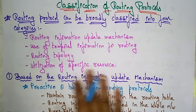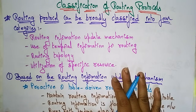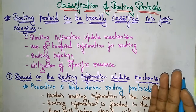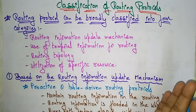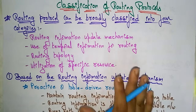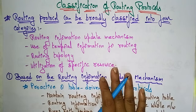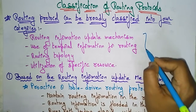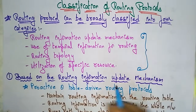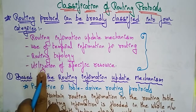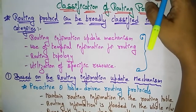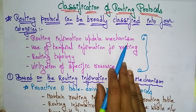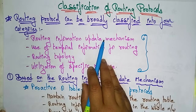In this video I want to just give the introduction part of the classification of routing protocols. Just like the MAC classifications you have learned, in the same way for routing protocols there are different classifications. The routing protocol can be broadly classified into four categories — you have to remember these four categories. The first is based on routing information update mechanism.